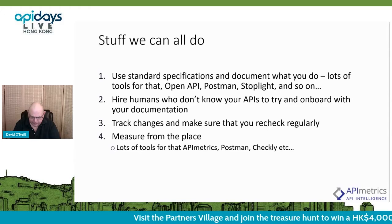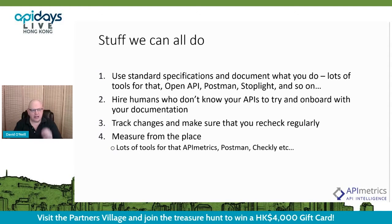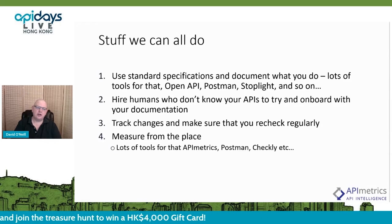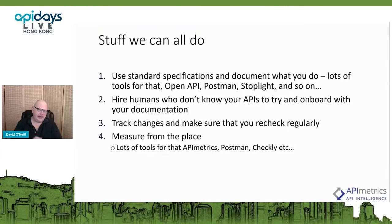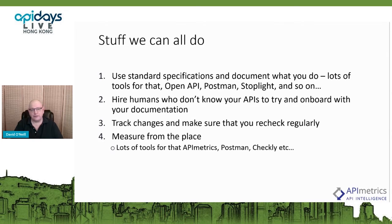Once you've built a solution and have it out there, get humans who have never seen your APIs before to read your documentation and onboard with it. You will not believe how many times that brings up things your internal team missed — it's much like proofreading your own work. Track changes and recheck them regularly; nothing worse than changing something and not documenting it so people are building to an old spec. And measure from the place the third parties work from. There are lots of tools — our own API Metrics, Postman monitoring, Checkly — but measure externally the key flows from where people are.